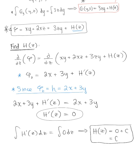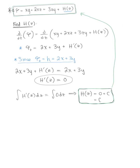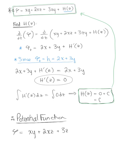We can now plug this final constant back into our potential function. Therefore, the potential function is phi equals xy plus 2xz plus 3zy plus c. This is our final answer.